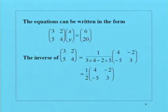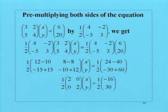The first step is to find the inverse of the matrix (3, 2, 5, 4), which is 1 over (3 times 4 minus 2 times 5) times the matrix (4, -2, -5, 3).